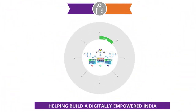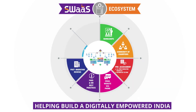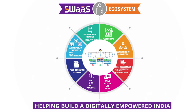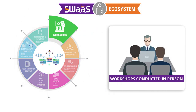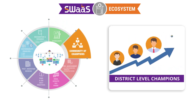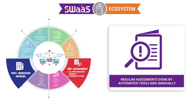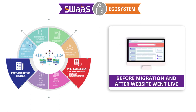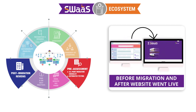The journey from 0 to 500 plus districts was enabled by a robust SWAS ecosystem which empowers government entities to easily migrate content to their websites. Workshops were conducted in person and over video conference to orient government entities with SWAS. A set of district level champions helped each other collaboratively all through the SWAS journey. Assessments were done regularly using automated tools and manually, both before migration and even after the website went live, to ensure continued compliance.